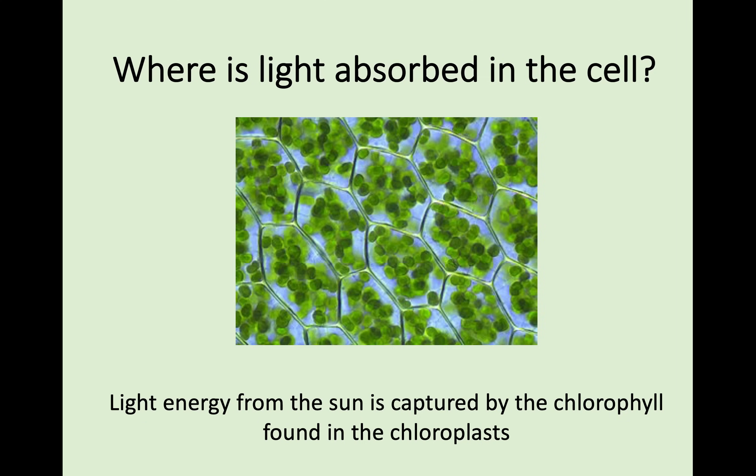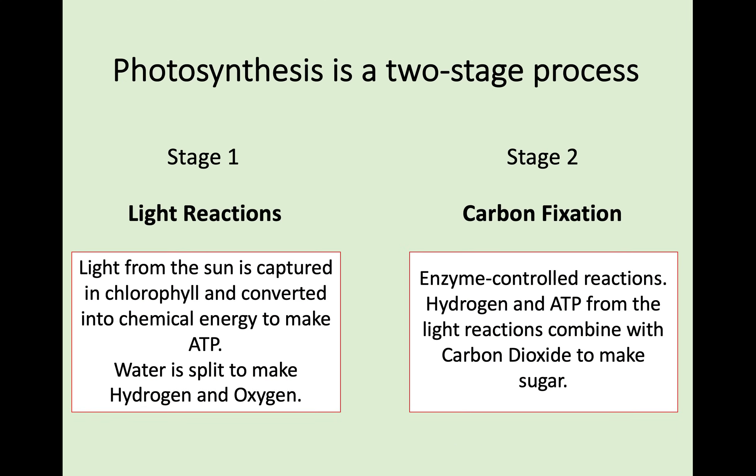Photosynthesis itself is a two-stage process, and you need to know the names of the stages, what happens in each stage, how they relate to each other, and you'll be able to both create and identify diagrams of both stages. What I've done on this slide is just a brief overview of what happens in each stage, but then we'll go into a bit more detail in both stages as well.